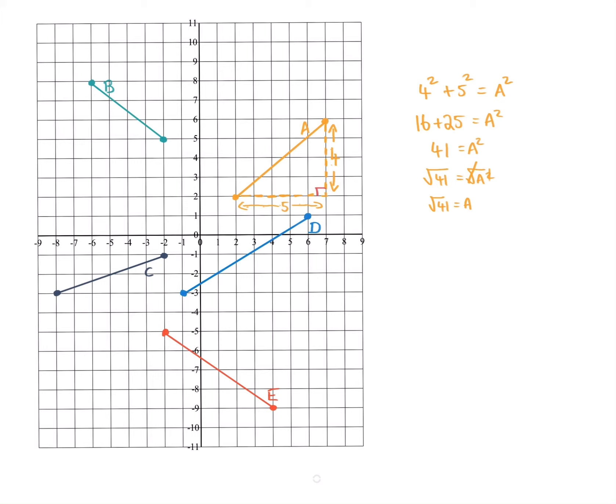And the good news is that this can be your answer. So you can leave it like that. So the length of the line A from here to here is the square root of 41.